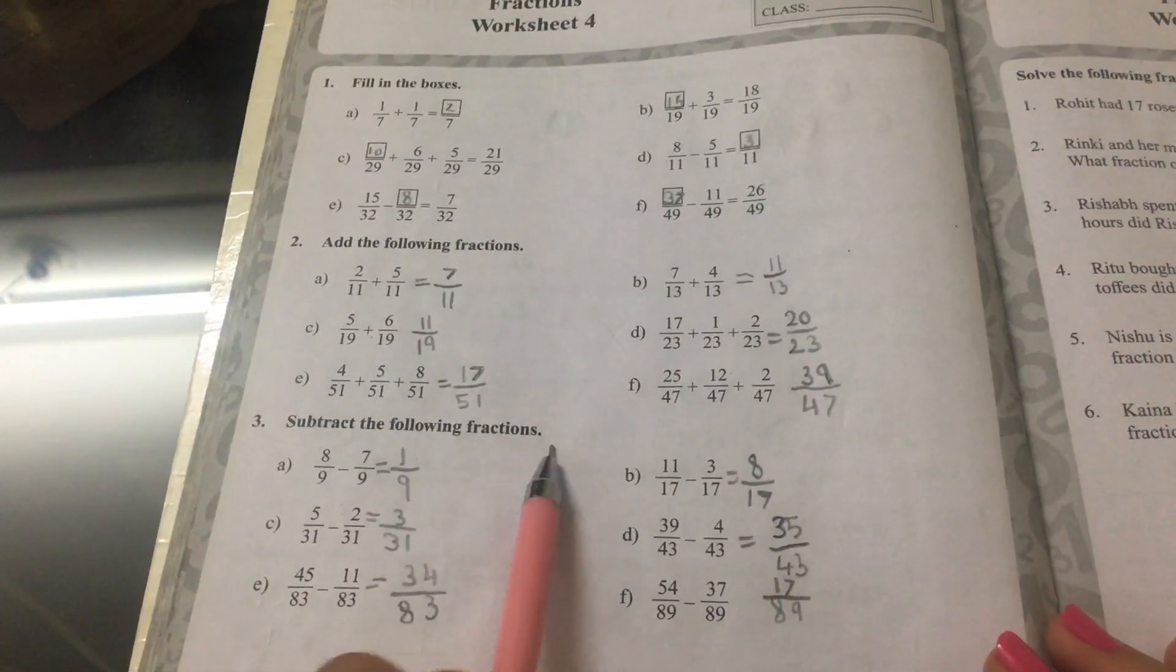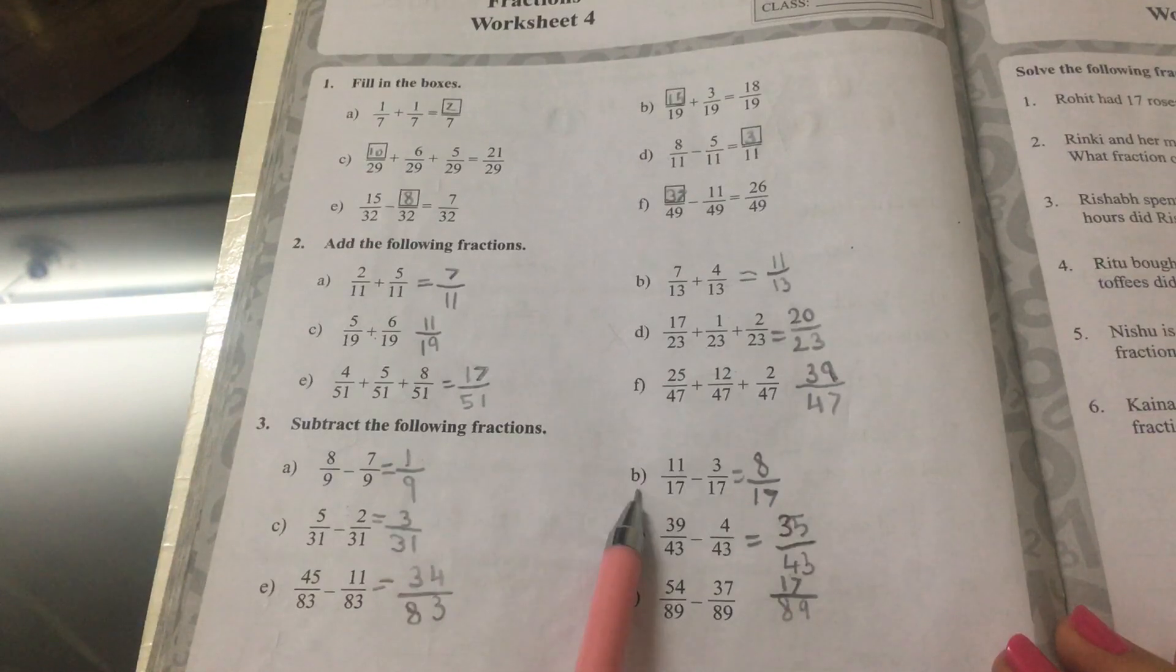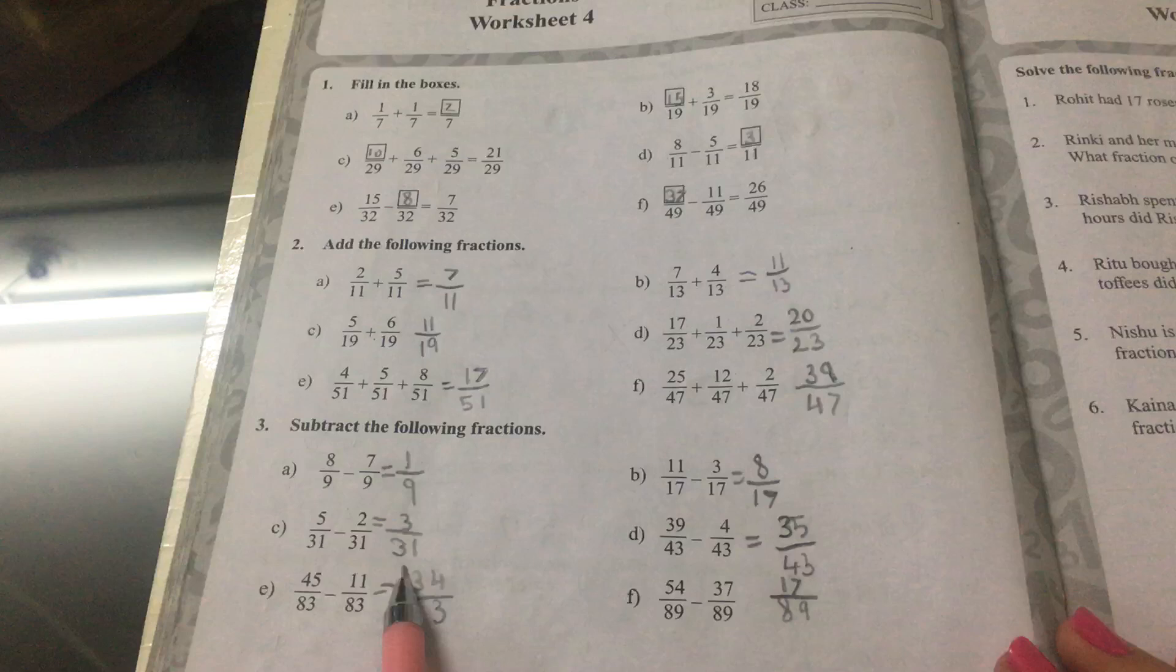Subtract the following fractions. A is equal to 1 ninth. B is equal to 8 seventeenths. C is equal to 3 thirty-thirds.